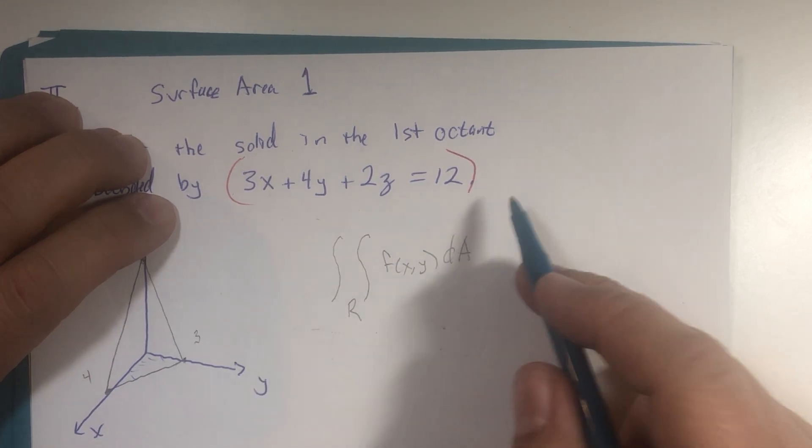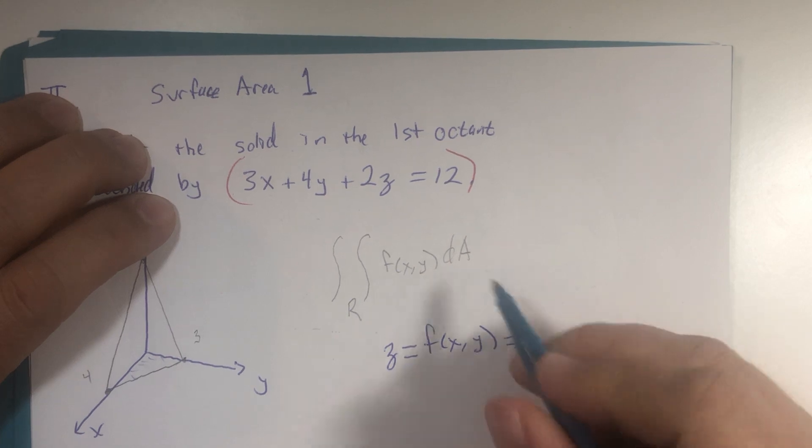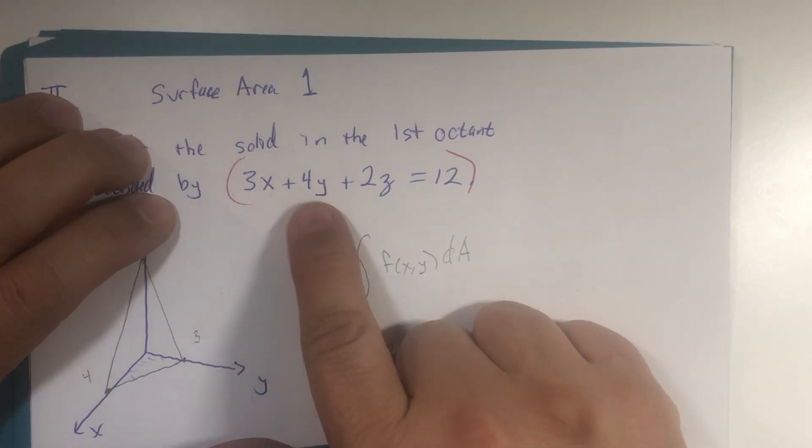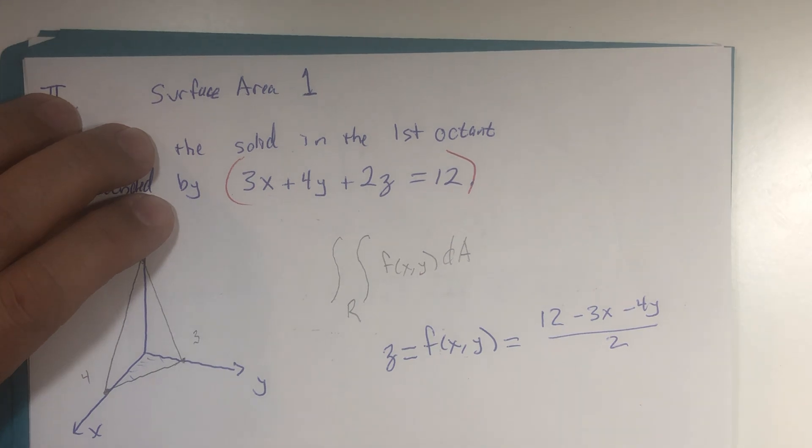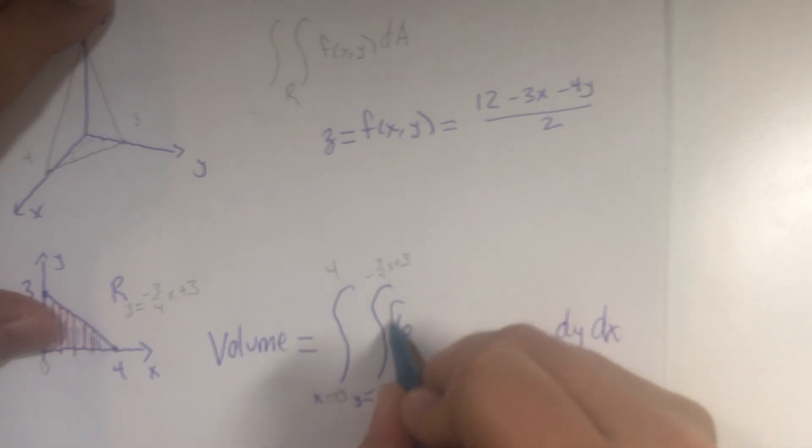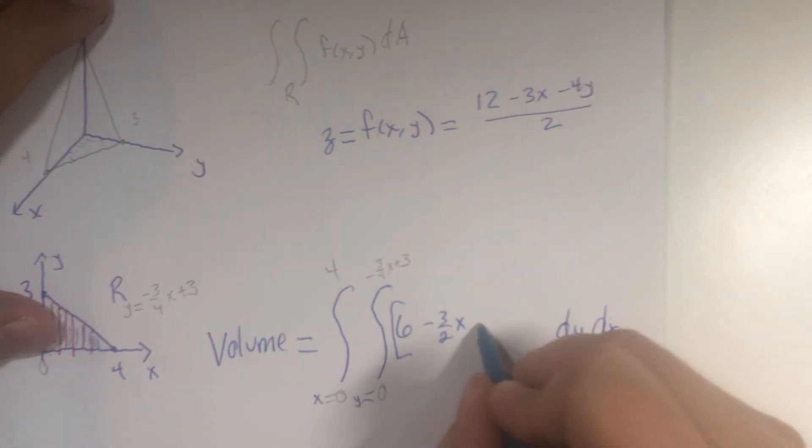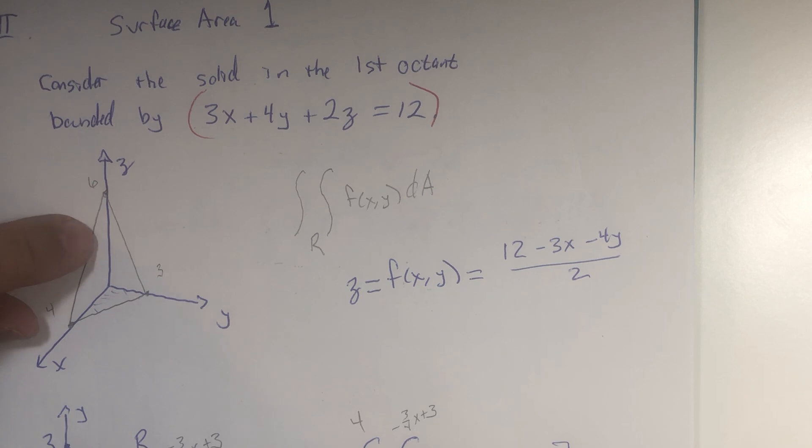If you subtract terms and then divide by 2, z, which is the same as the function we're looking for, is 12 minus 3x minus 4y, all divided by 2, and we can write that reduced. 12 over 2 is 6, negative 3/2 x minus 4 over 2 is negative 2y. This would calculate volume of this solid object in the first octant.